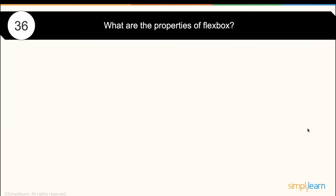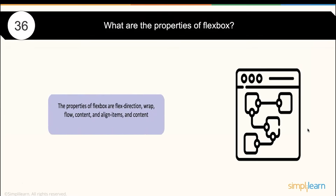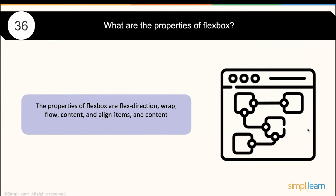What are the properties of flexbox? Flexbox is designed for alignment purposes. The typical flexbox properties are: flex-direction, flex-wrap, justify-content, align-items, and align-content. It is an alignment-focused property set.